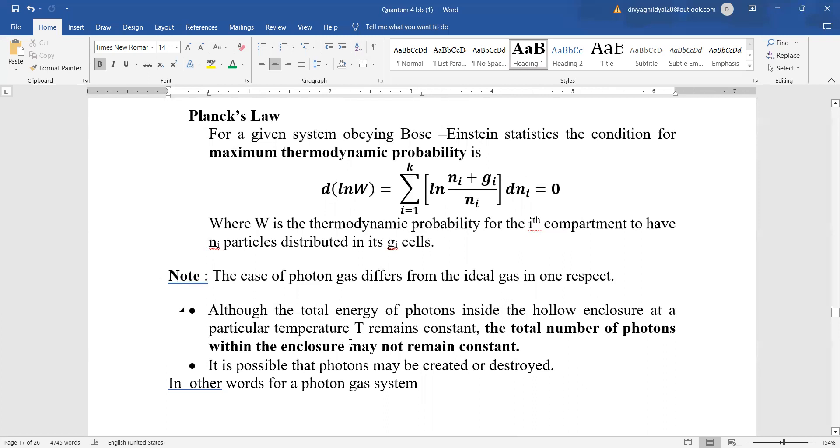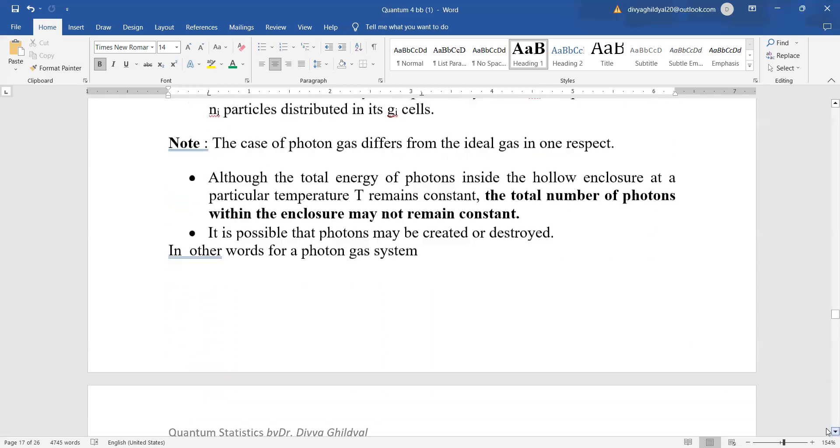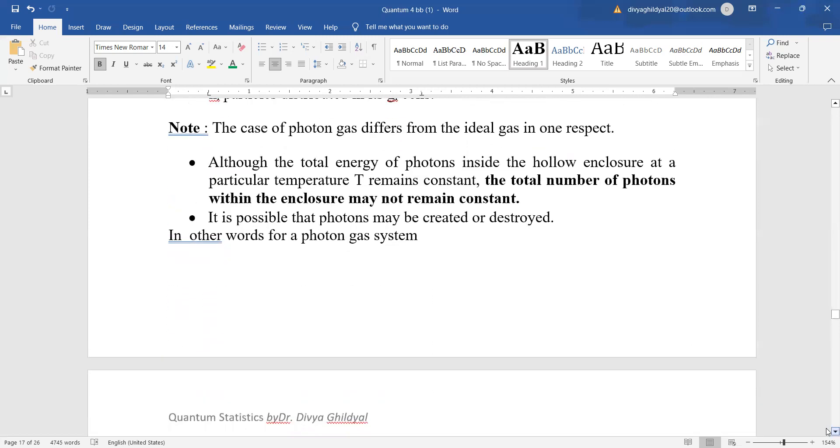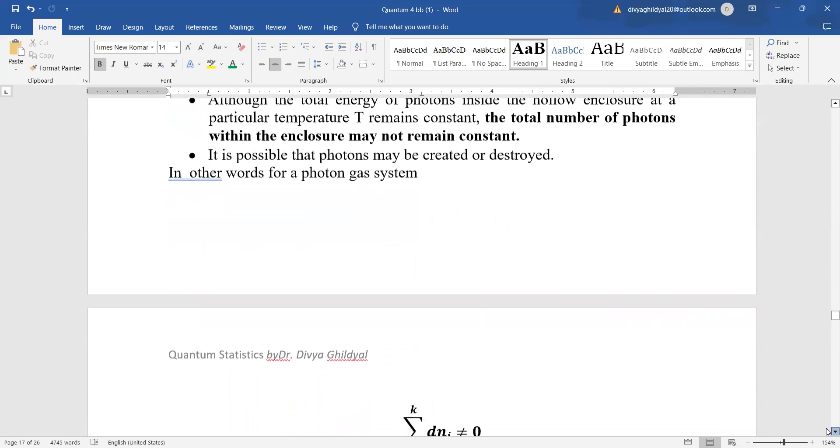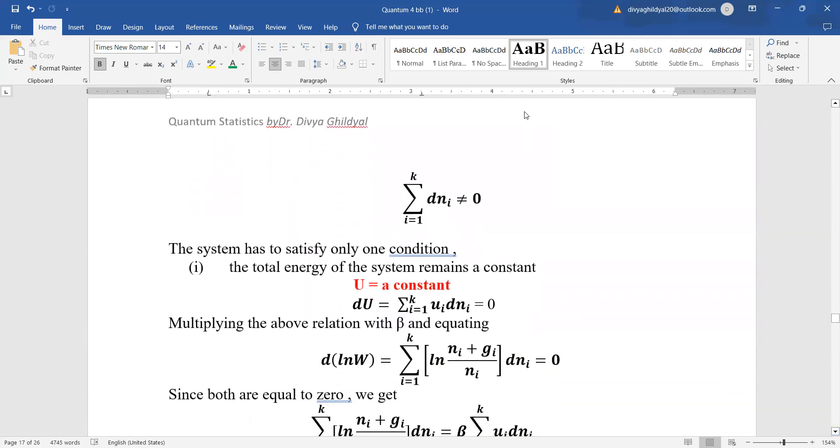In case of photons, the total number of photons in the enclosure will not remain constant. It is possible that photons may be created or destroyed, so they are not going to remain constant. But the law of conservation of energy, which is universal, will remain constant.